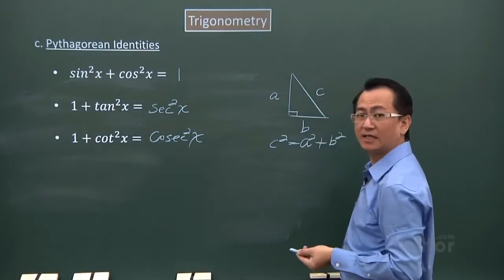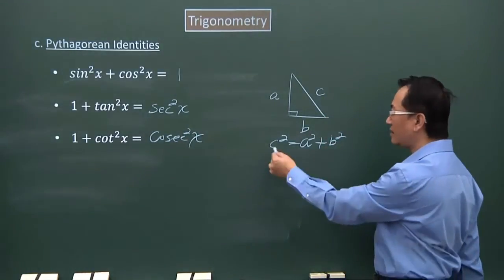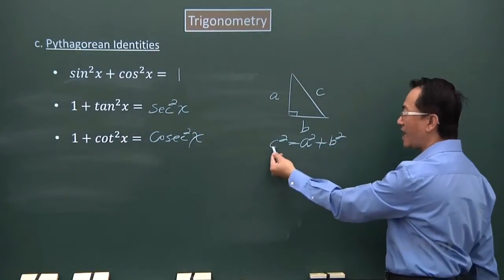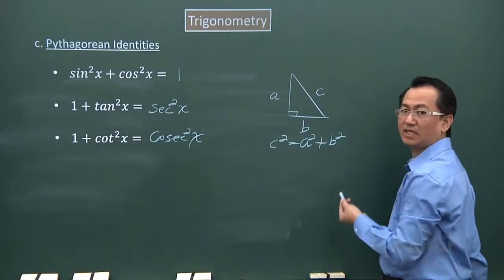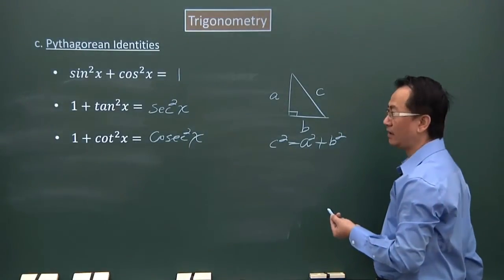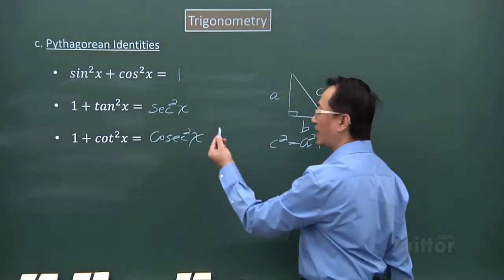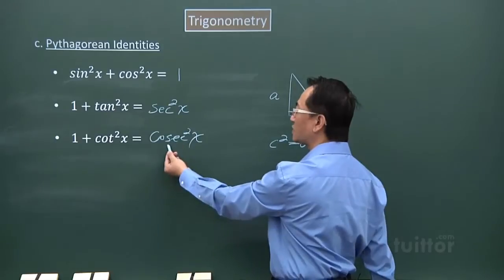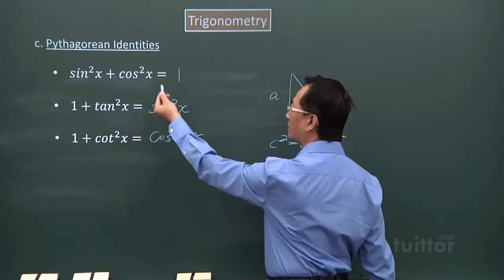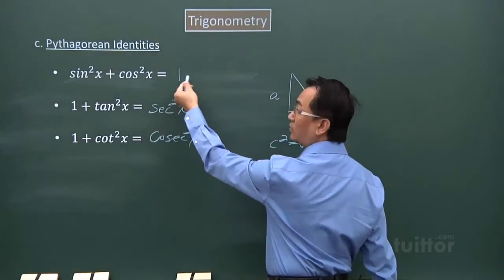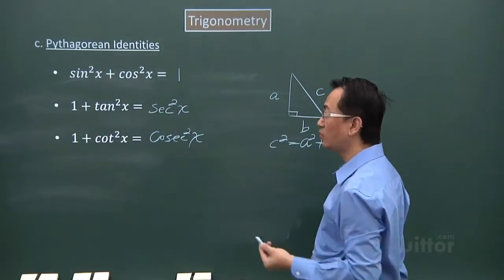If you look carefully at these identities again, every single term is squared. You get cosecant squared, secant squared, and the constant 1 is really 1 squared, which gives you 1.